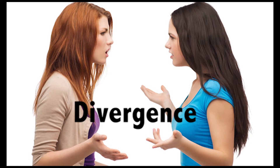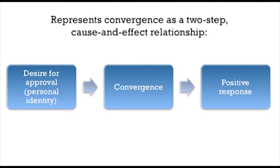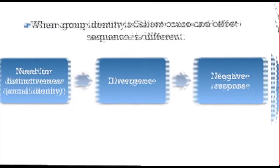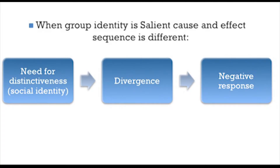Instead of trying to sound like them, you would want to sound the opposite and try not to match their voice, tone, accent, posture, or gestures. This is a graphical representation that helps us understand a little better. The first graph represents convergence as a two-step cause and effect: the desire for approval leads to convergence and ends with a positive response. The second graph shows divergence, where a salient group identity and a need for distinctiveness leads to divergence and a negative response.